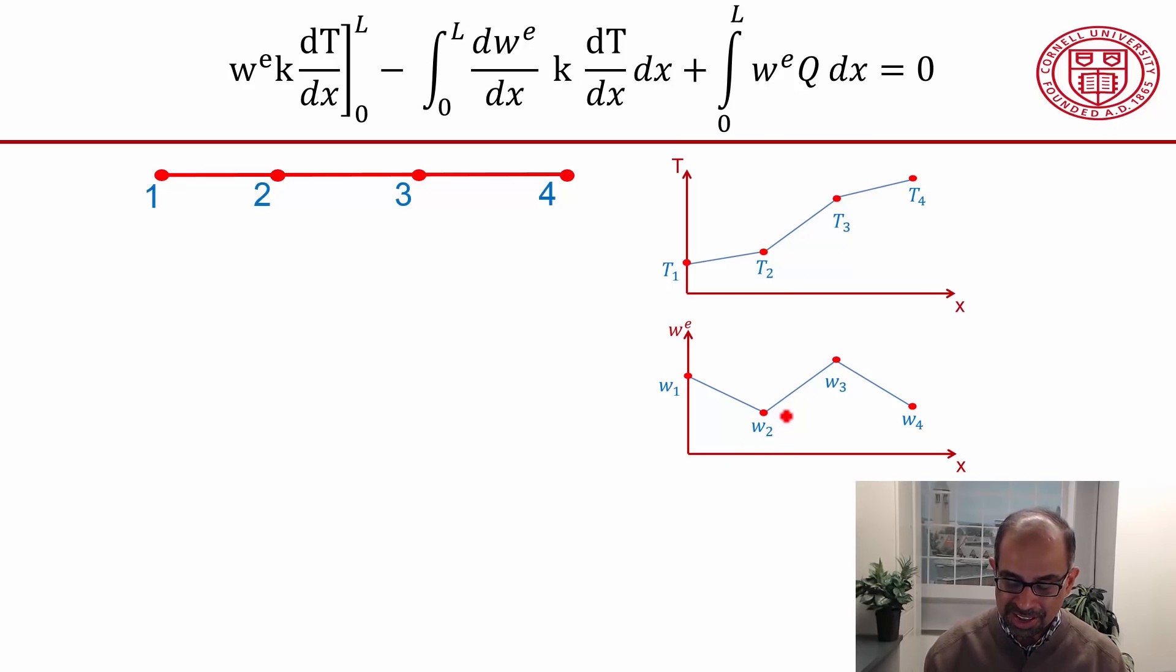When I do this integration, I'll do this integration element by element. When I do the integration over the first element, I'll get terms where I'll have w1 multiplying t1, and I'll also get a term where w1 multiplies t2.